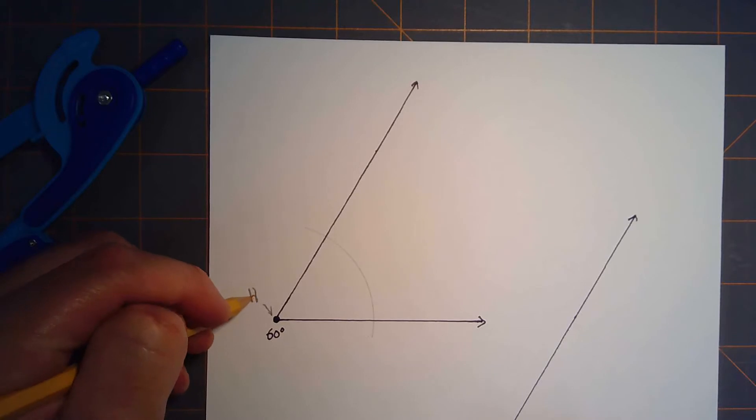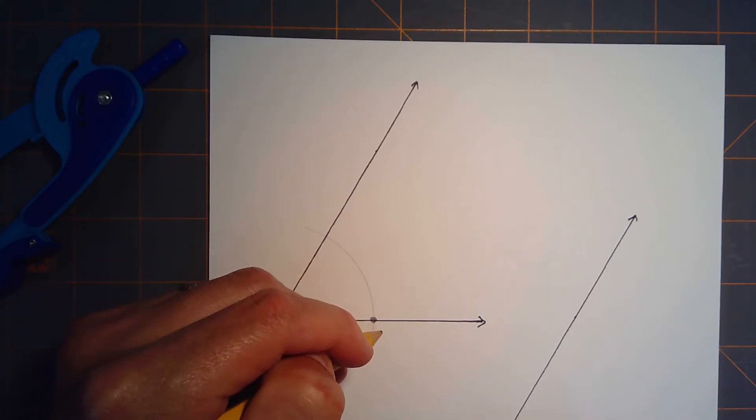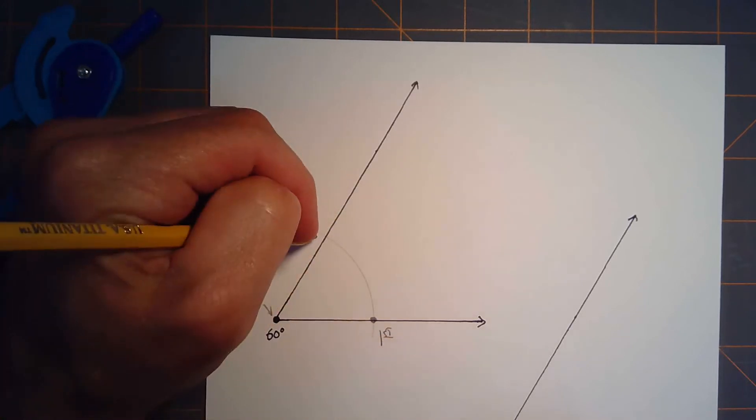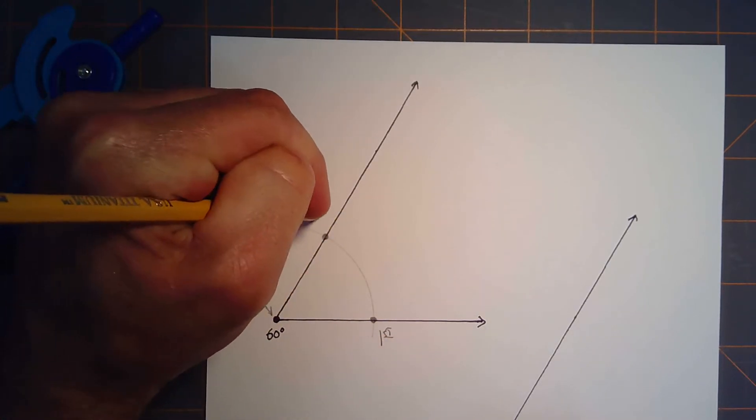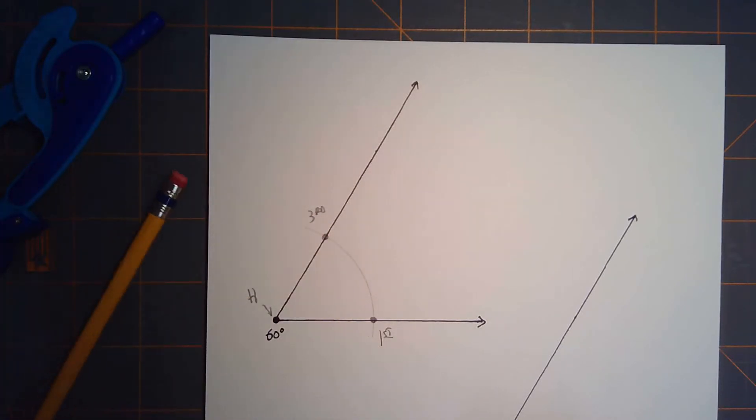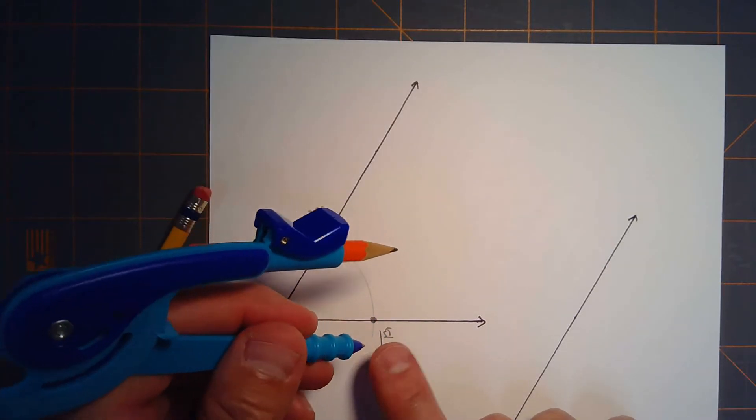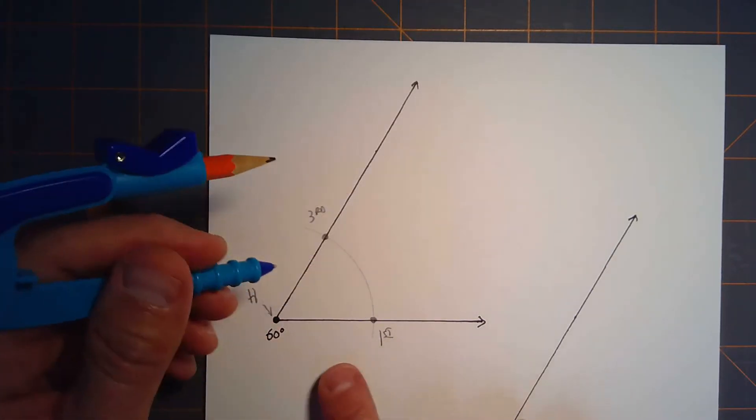I tell students to suppose the vertex is home plate. This point where the arc hits the ray is like first base, and this point where the arc hits the other ray is like third base. What we need to do is locate second base, which is going to be out here somewhere. To do that, we keep the radius of our compass the same, move the compass onto first base, and make an arc out here in the outfield.